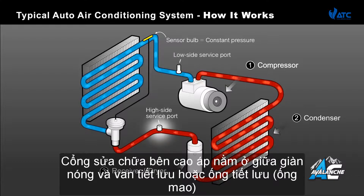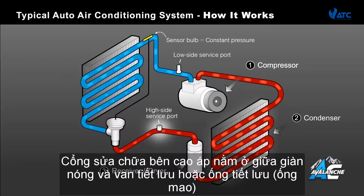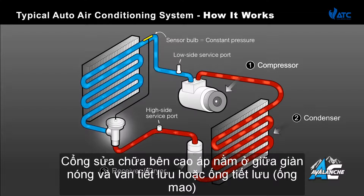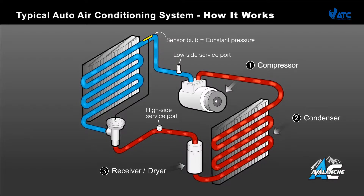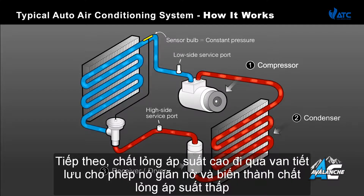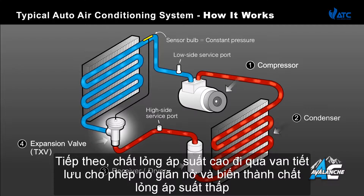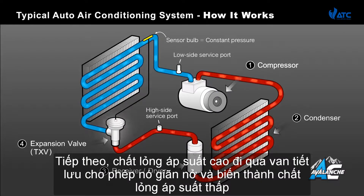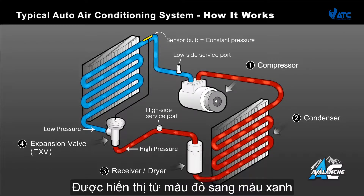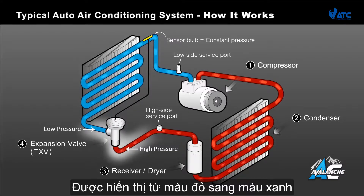The high side service port is located here, between the condenser and the expansion valve or orifice tube. Next, this high pressure liquid passes through the expansion valve, allowing it to expand and turn into a low pressure liquid, as indicated by our color change from red to blue.